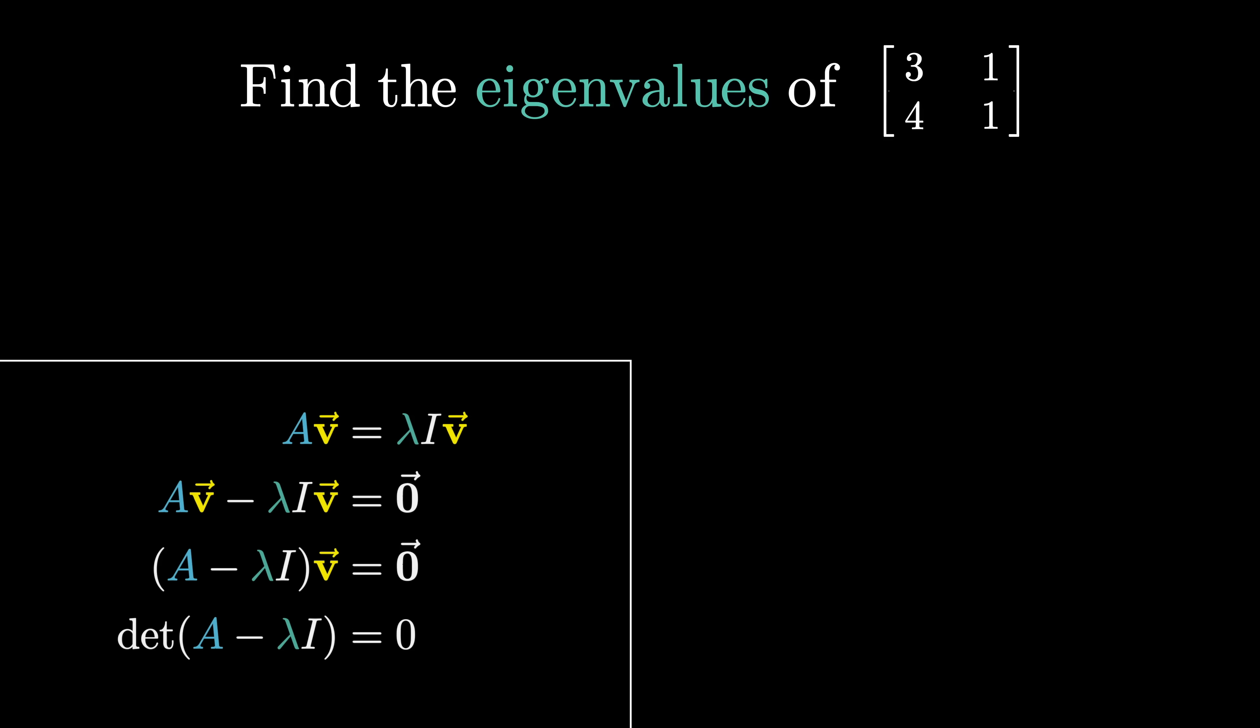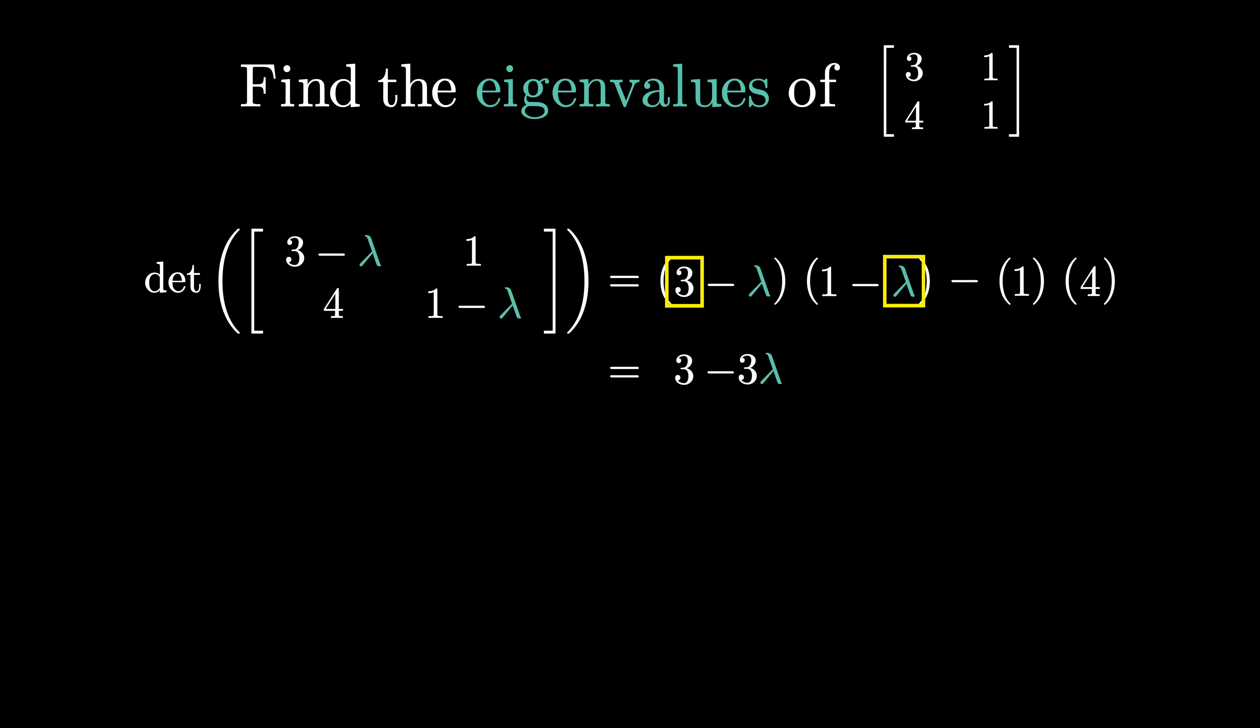So the usual way to compute eigenvalues, how I used to do it and how I believe most students are taught to carry it out, is to subtract the unknown value lambda off the diagonals and then solve for when the determinant is equal to zero. Doing this always involves a few extra steps to expand out and simplify to get a clean quadratic polynomial, what's known as the characteristic polynomial of the matrix. The eigenvalues are the roots of this polynomial, so to find them you have to apply the quadratic formula, which itself typically requires one or two more steps of simplification.